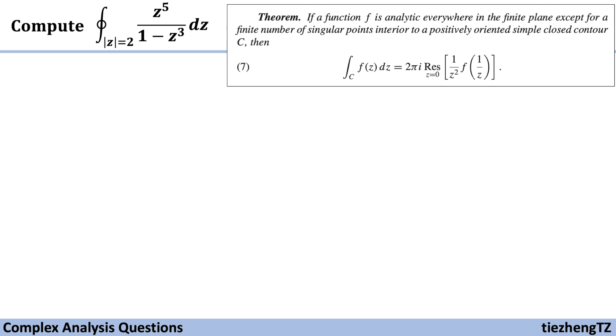Now let's take a look at our question. We have the function f(z) which is z^5 over 1 minus z^3. We know it is analytic everywhere in this plane, which is |z| = 2, and it's actually a circle with a radius of 2.